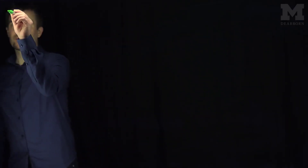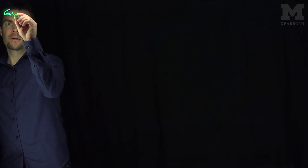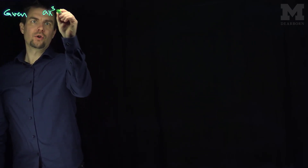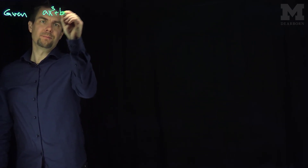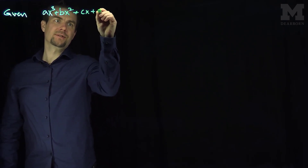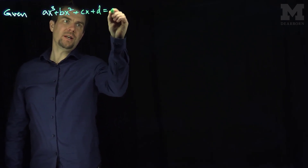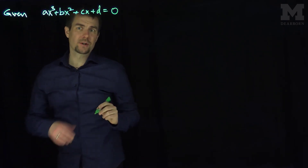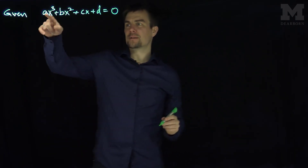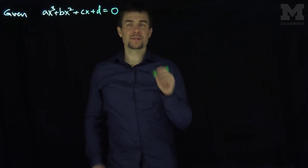Hello students. In this video we'll see the procedure for solving a cubic equation. If we're given ax³ + bx² + cx + d = 0, the first thing we want to do to solve a cubic equation is divide through by a.